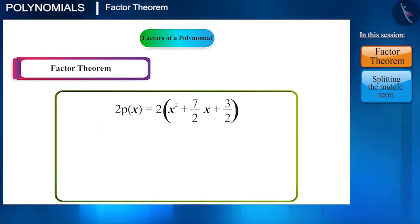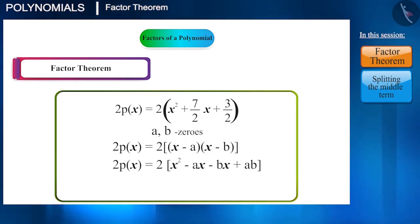And suppose, if a and b are its two zeros, then you can write this polynomial in terms of factors as 2p(x) is equal to 2(x minus a)(x minus b). And here, you can see that the constant is ab. That is, for this polynomial, ab is 3/2.